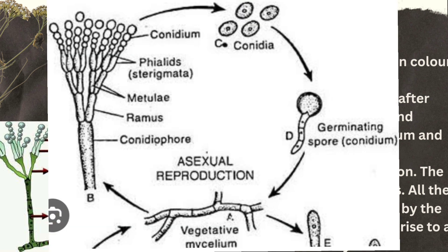Now we understand asexual reproduction through the life cycle diagram. Here we can see the mature Penicillium and the formation of conidia. The mature conidia are dispersed. After dispersal, they find a suitable substratum where they attach and begin germination through the germ tube. The germ tube then elongates and septa begin to form.